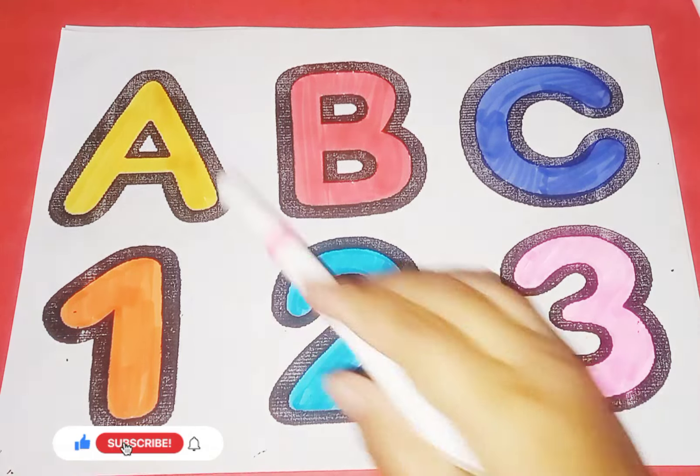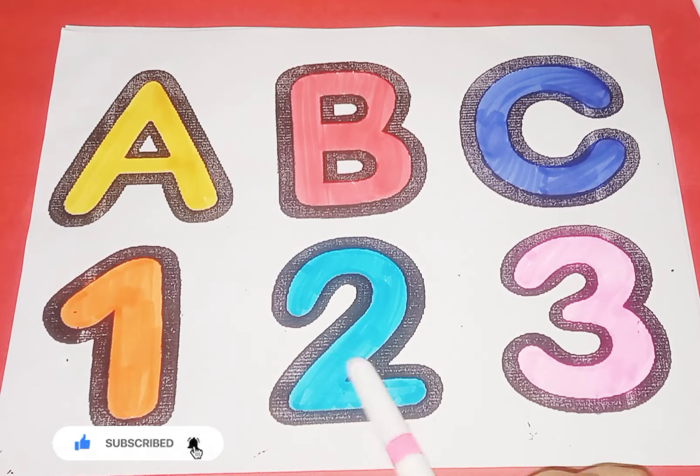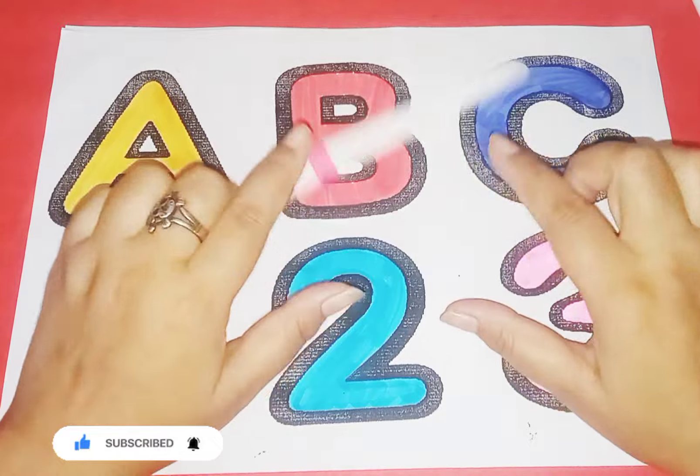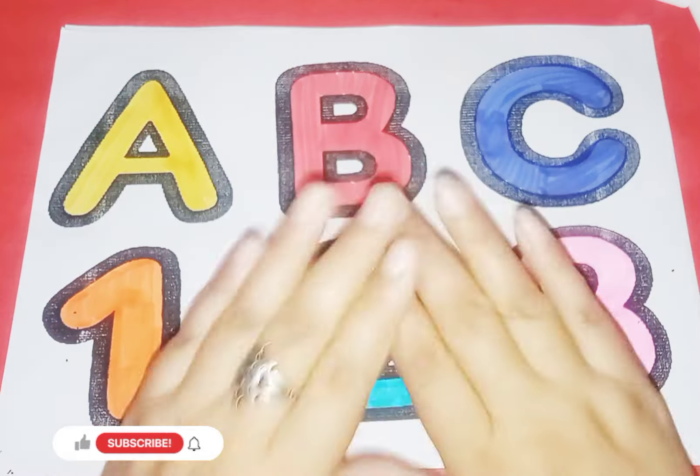So kids, today we learn alphabets and number. Alphabet A, B, C, number 1, 2, 3. So kids, I hope you like the video. If you like the video, please like and subscribe my channel. See you next video. Bye-bye, bye-bye.